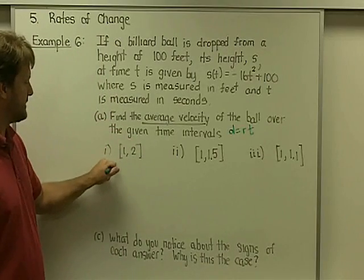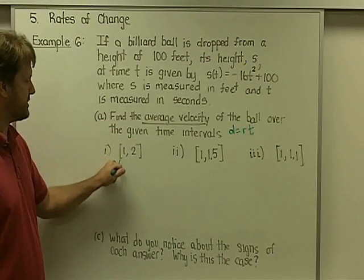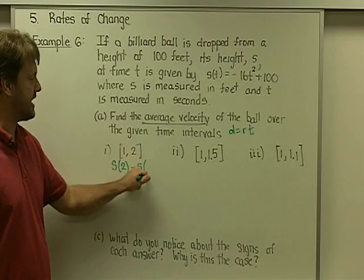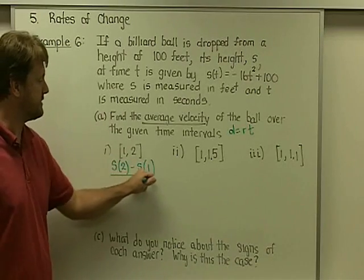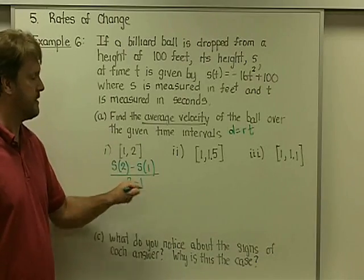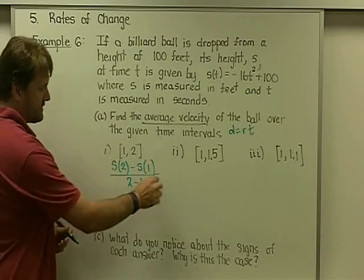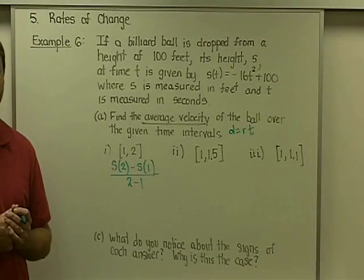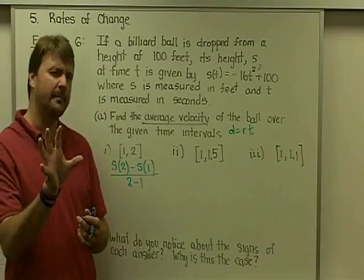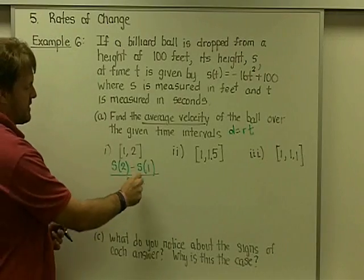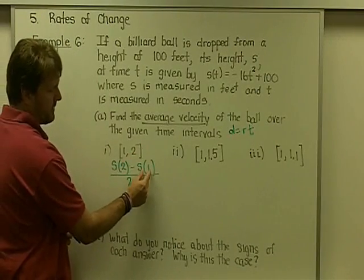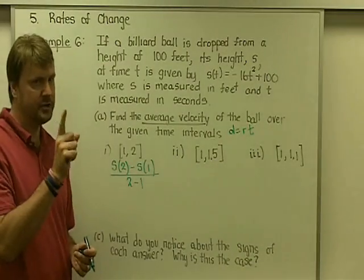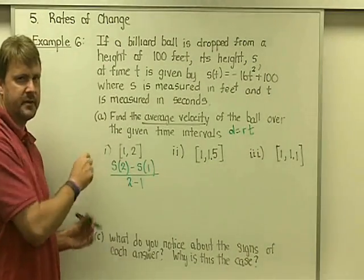So in this particular case, you want to find the position at time two, subtract the position at time one, and simply divide by two minus one. Now, would it make a difference if I had swapped these ones and twos? No, it wouldn't. In fact, it probably would make more sense because the position of the ball is probably going to be higher off the ground at time one than it is at time two, so you might be expecting perhaps a negative number here.